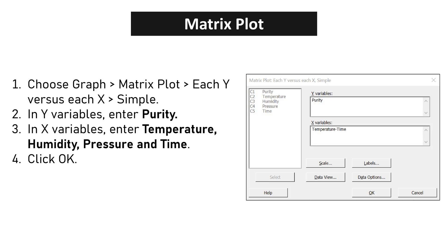Matrix plots in Minitab visually represent relationships between variables, aiding in the preliminary assessment of data trends. Choose Graph > Matrix Plot > Each Y versus Each X as Simple. In Y variables, enter purity. In X variables, enter temperature, humidity, pressure, and time. Click OK.